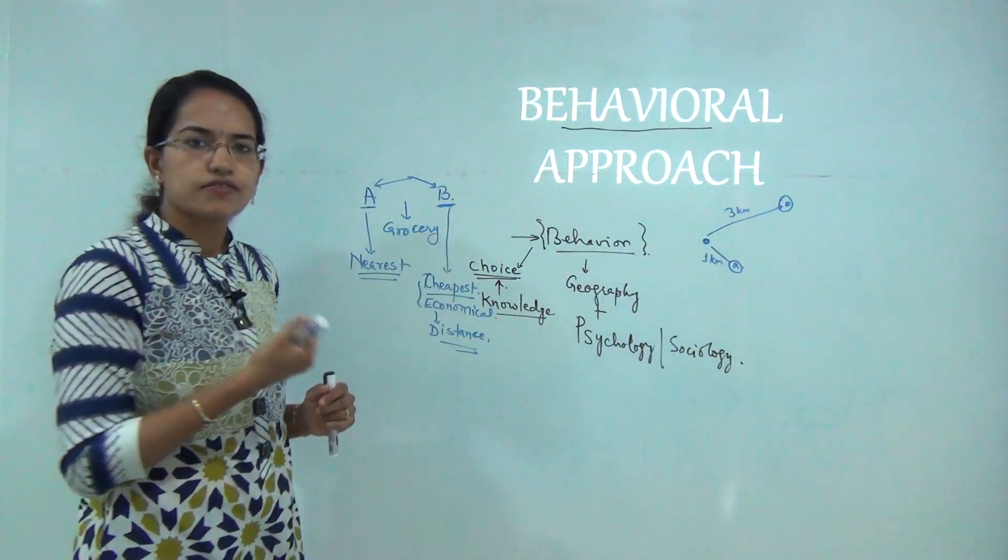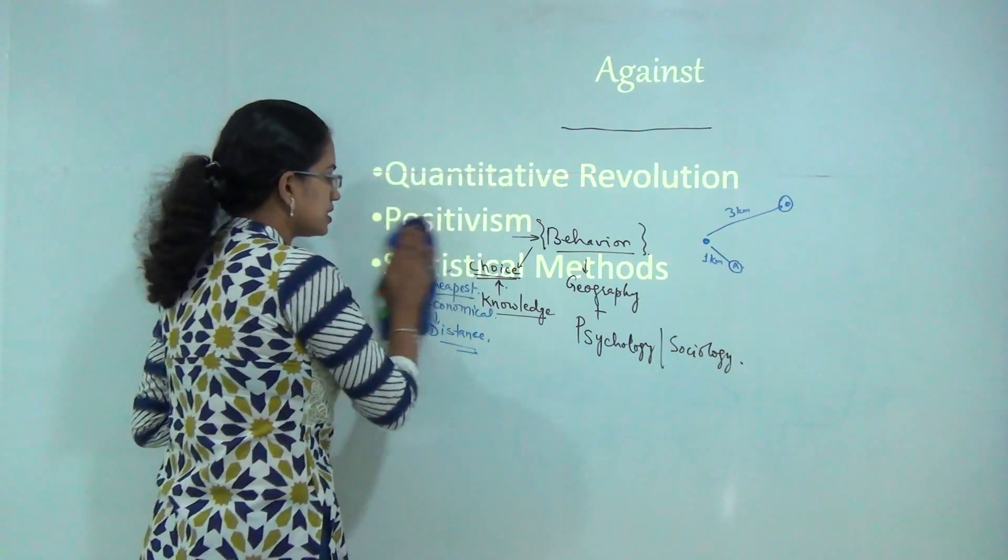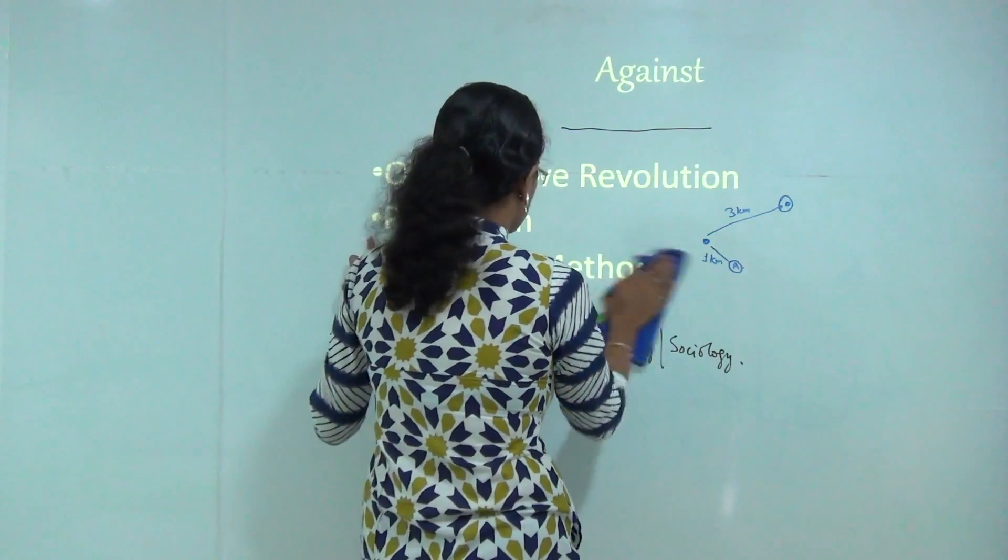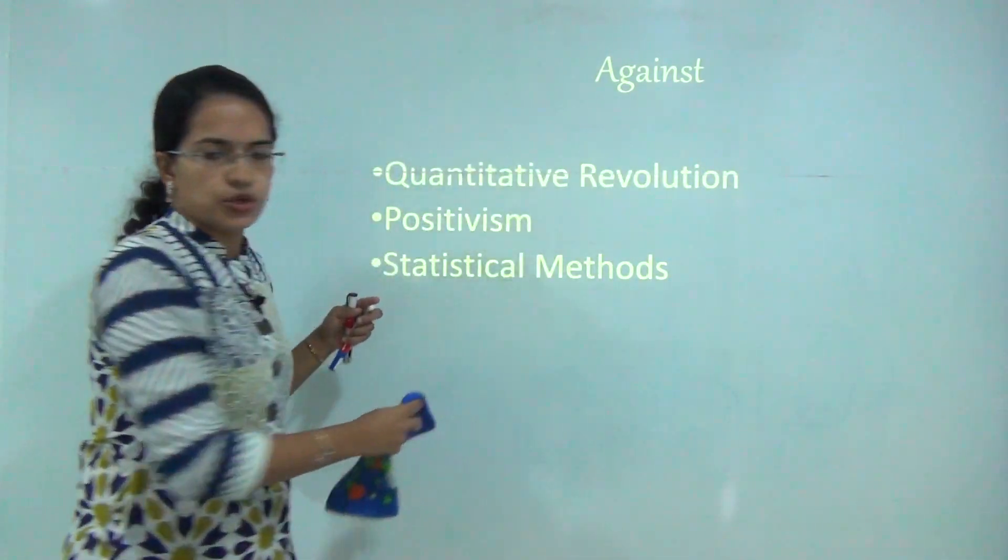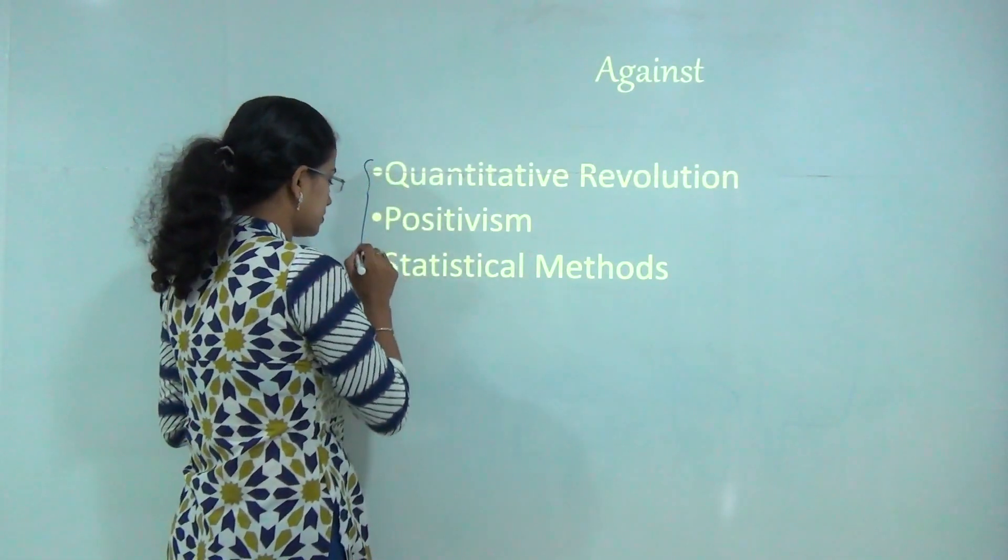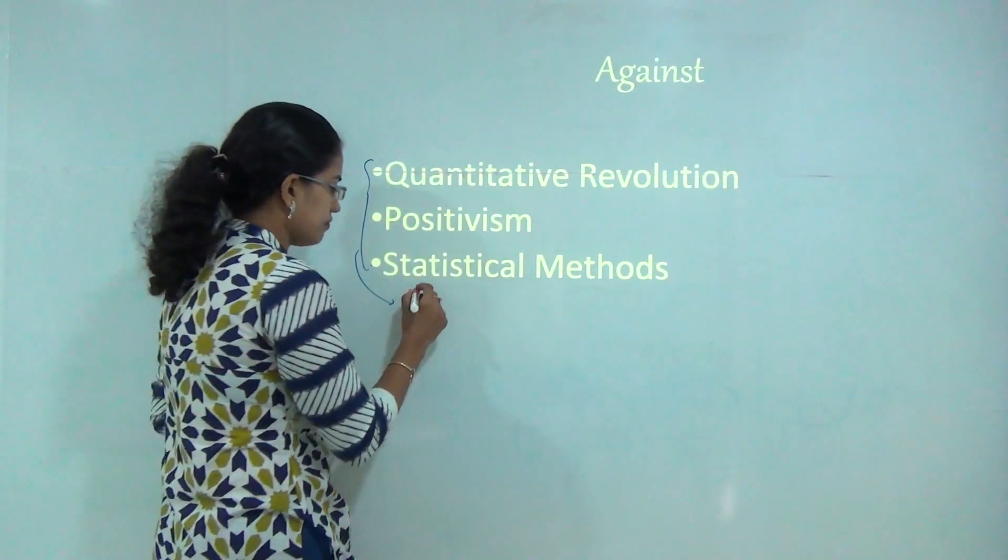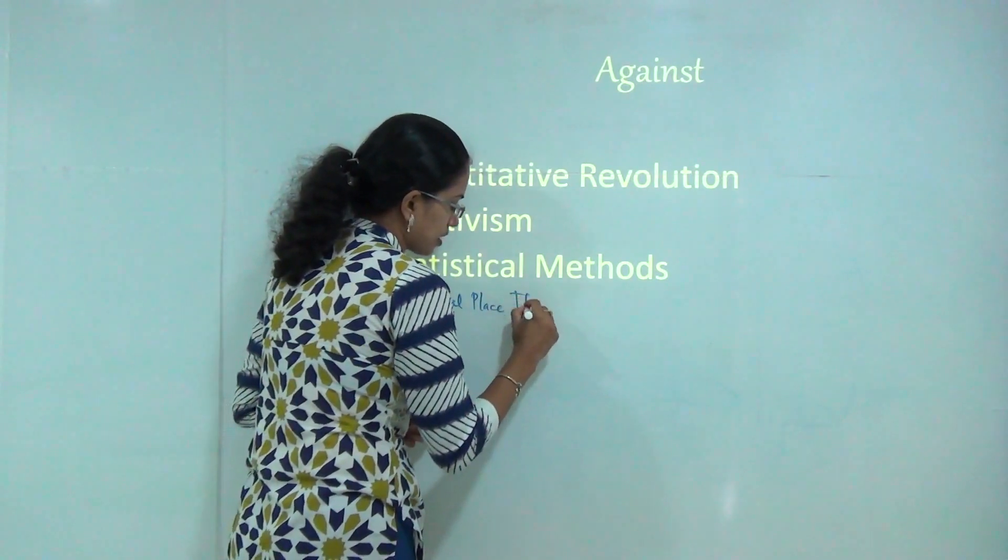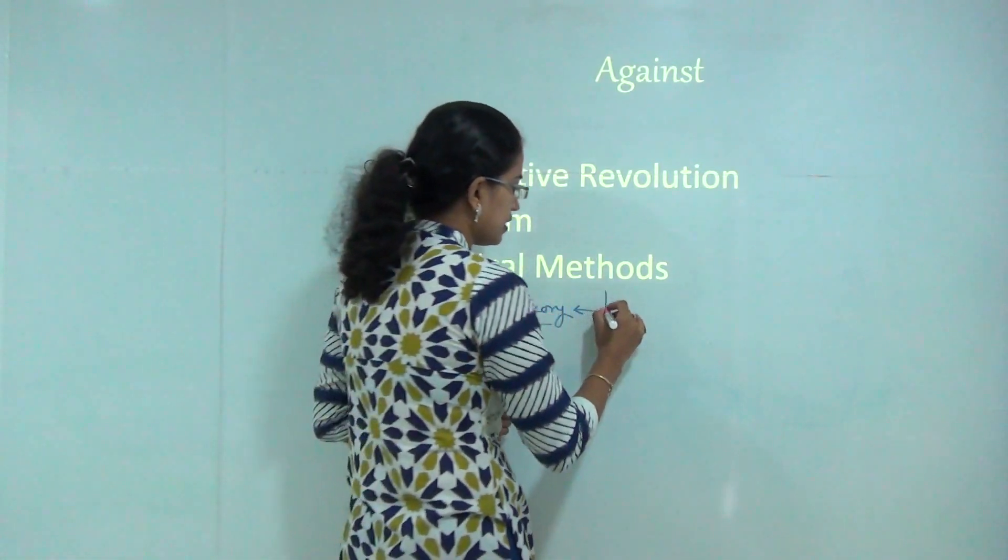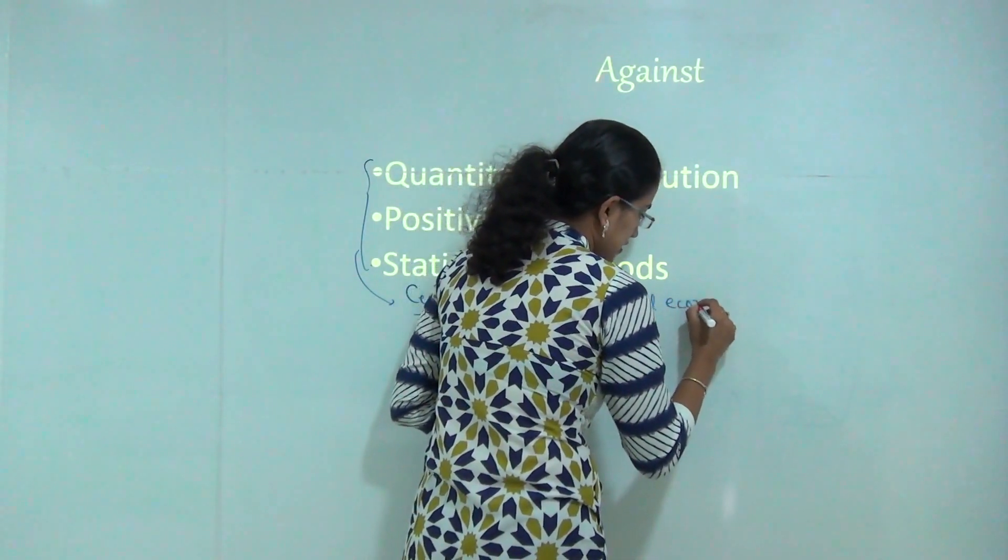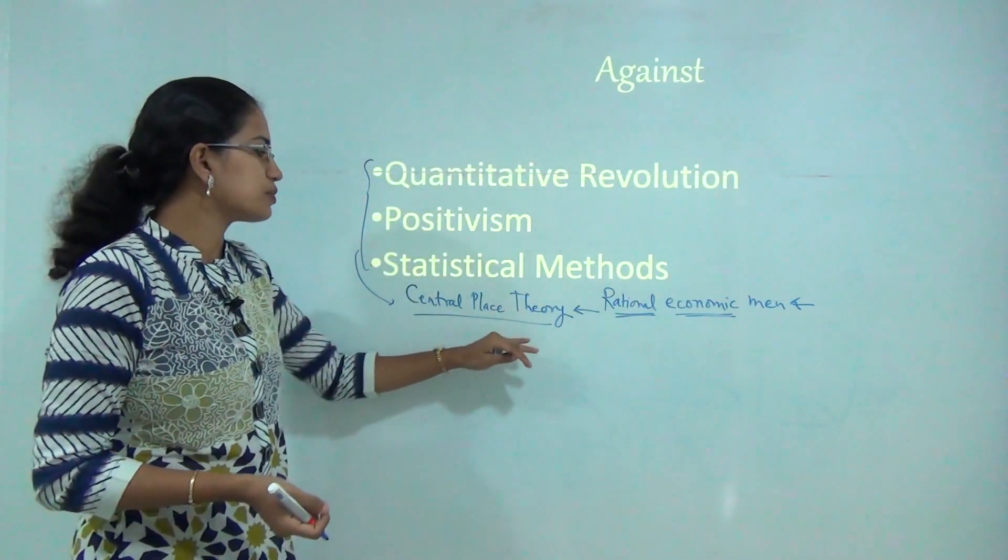Now why did this approach come into origin? This approach came as a result of developments in positivism, the statistical methods, and the quantitative revolution that had taken place. But this theory opposed all three concepts. Most theories based on these concepts, for example the central place theory, talked about a rational economic man with prerequisites that had to be there in order to proceed with the theory.